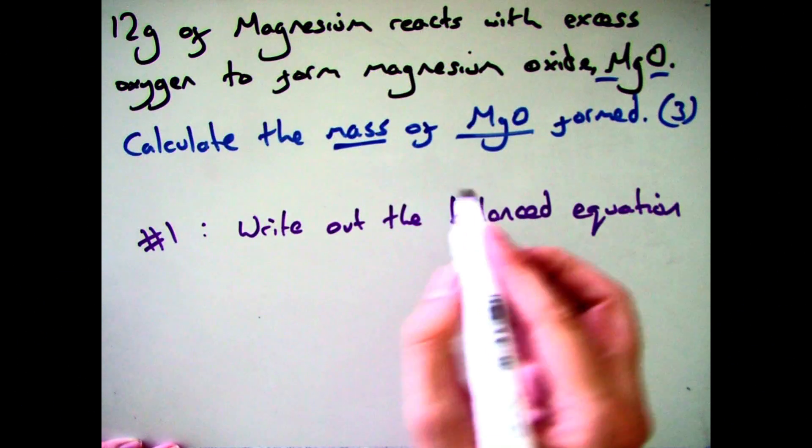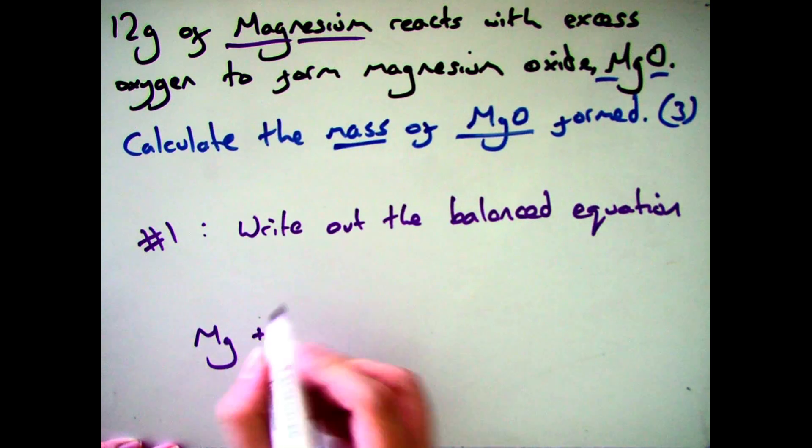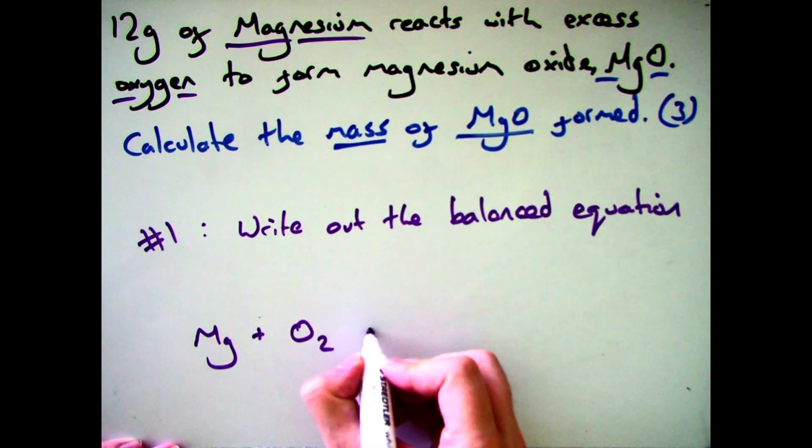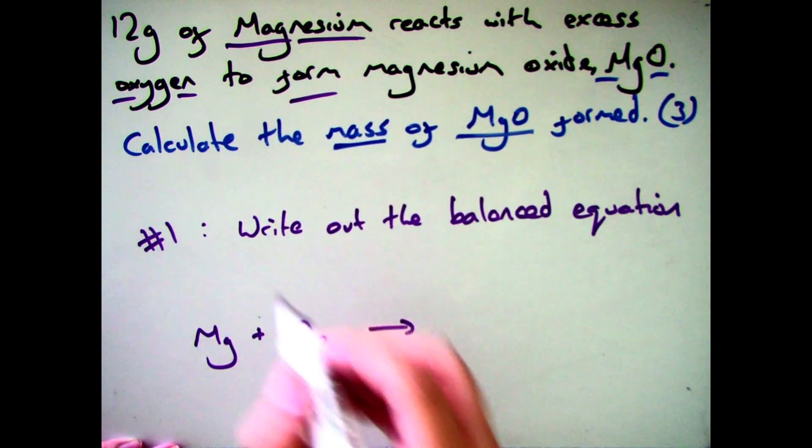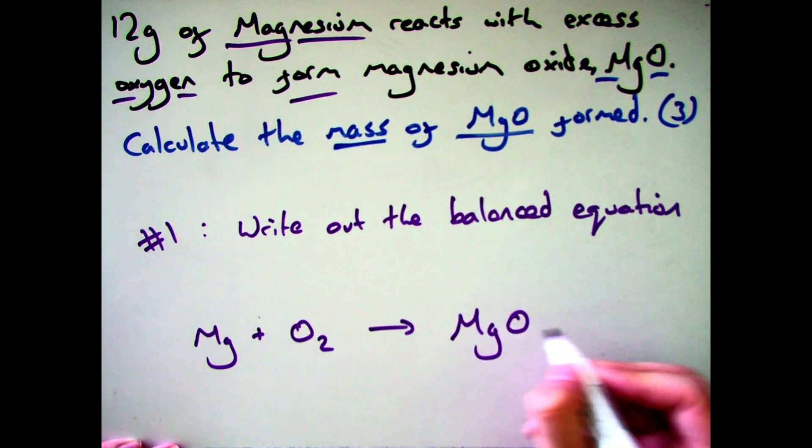Step one is the balanced equation then. So we start off with magnesium which is Mg. You'll be able to tell that from your periodic table and it's reacting with oxygen. You need to remember that's diatomic so O2. The form part means you've got your arrow and it forms magnesium oxide which it gives you is MgO.